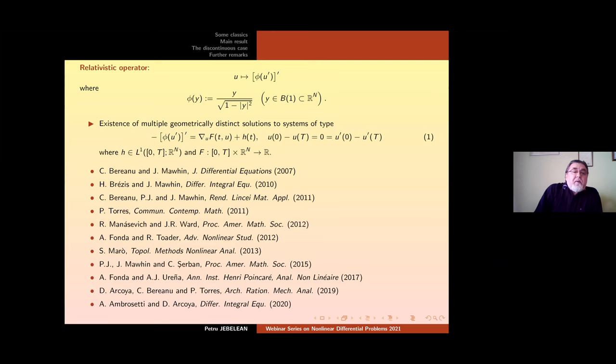Okay, let us begin. First, I would like to recall that the relativistic operator here defined maps φ(u') where φ is the strongly monotone operator from the open unit ball in R^n to R^n. We will be concerned with the existence of multiple geometrically distinct solutions. The systems of type 1 here where H, the forcing term is an L^1 function, while the potential capital F will be a Carathéodory function which is of class C^1 with respect to the second variable.